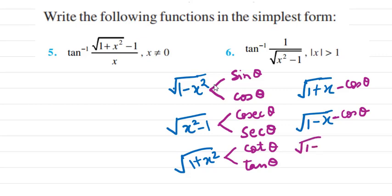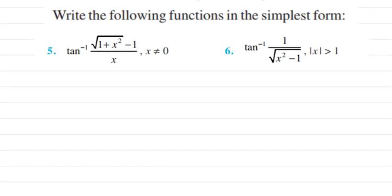Let me show you: if you have 1−cosθ, this can be written as √2·sin(θ/2). Now for the first question, you have √(1+x²). For this expression you can take x as tanθ. You'll get 1+tan²θ = sec²θ, so the numerator becomes secθ−1 and the denominator is tanθ, and then we simplify to get the answer.